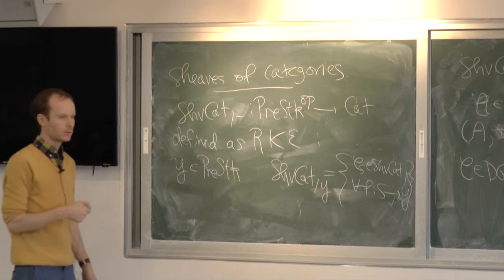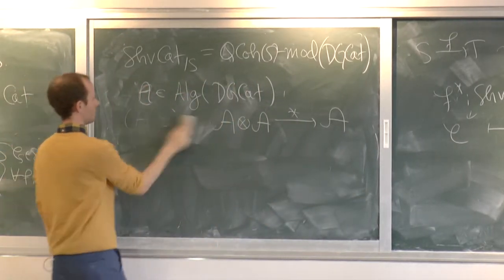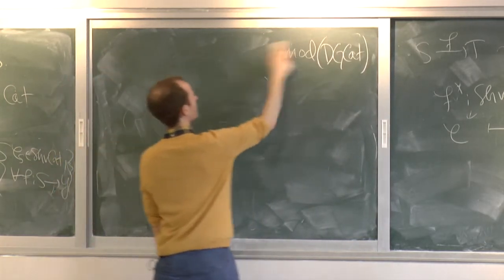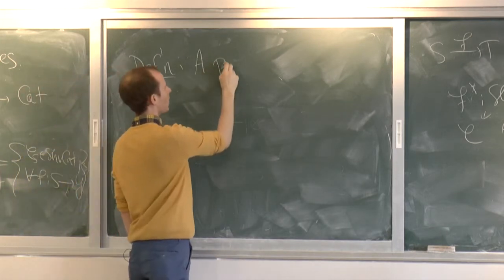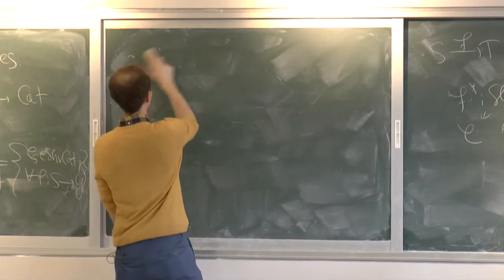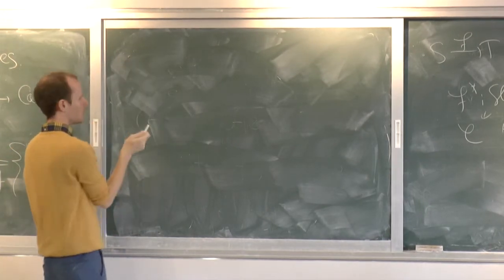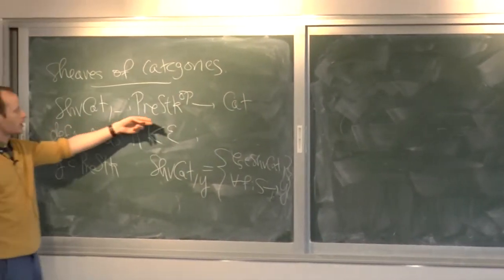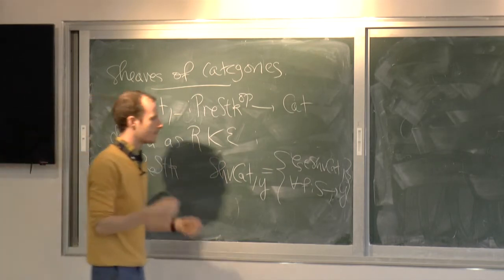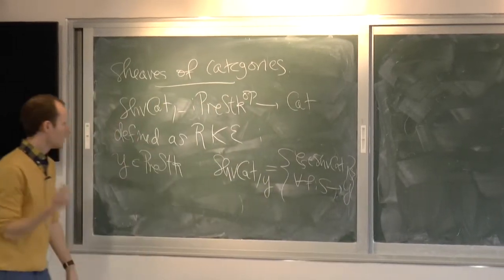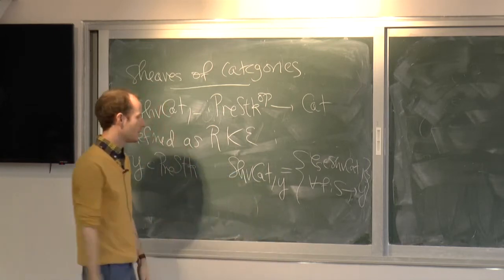Basic games we can play with these sheaves of categories: first, by definition it's a contravariant functor, so pullback extends to a pullback functor for any morphism of pre-stacks. Second, you can prove various nice theorems about this—it satisfies FPPF descent, that kind of stuff. Another construction is global sections.